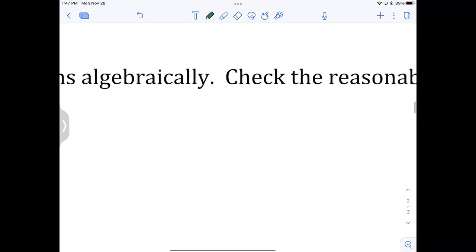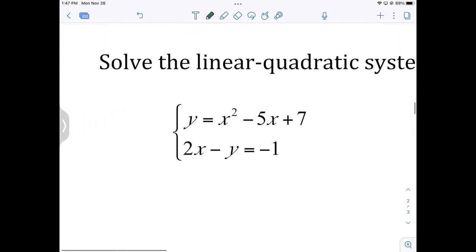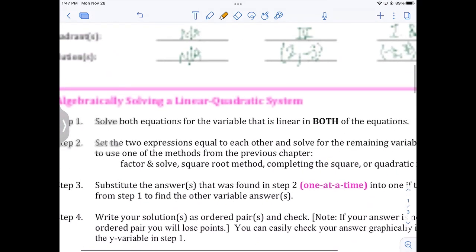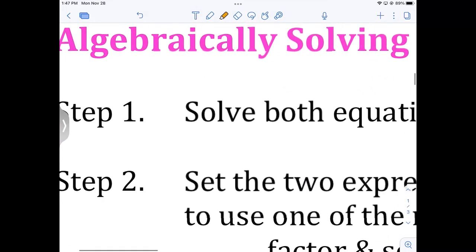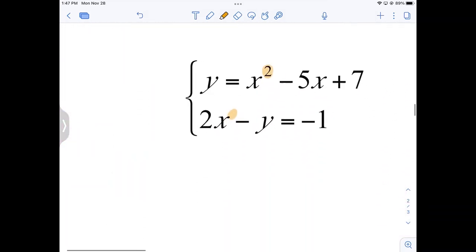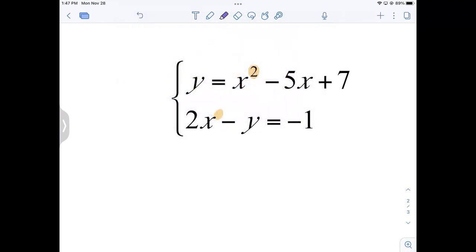So that's important to understand before we start, that the systems that we're solving, which are part line, part quadratic, they can have zero, one, or two solutions. Most of them are going to have two solutions, but we need to have our eyes open for the other two scenarios. All right, let's try it out. Solve the linear quadratic system algebraically. Check the reasonableness of your answers. Now here's how we notice it: we have a quadratic and linear. X to the first. This is a quadratic linear system.